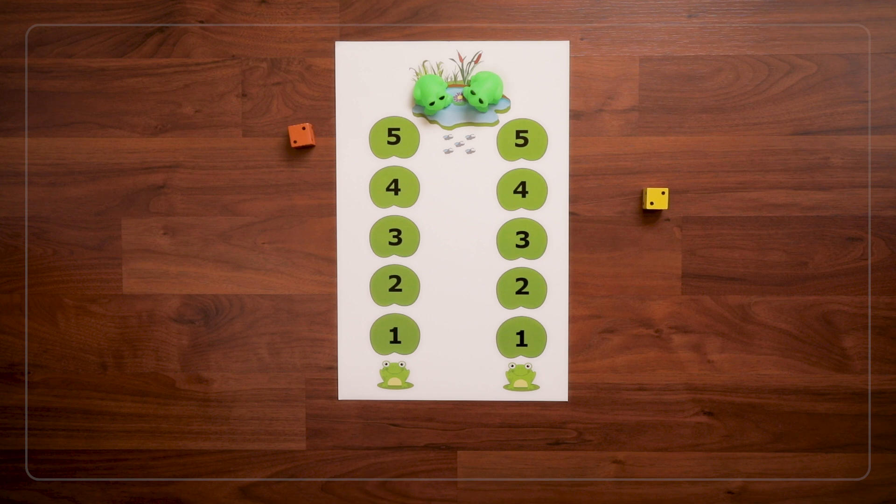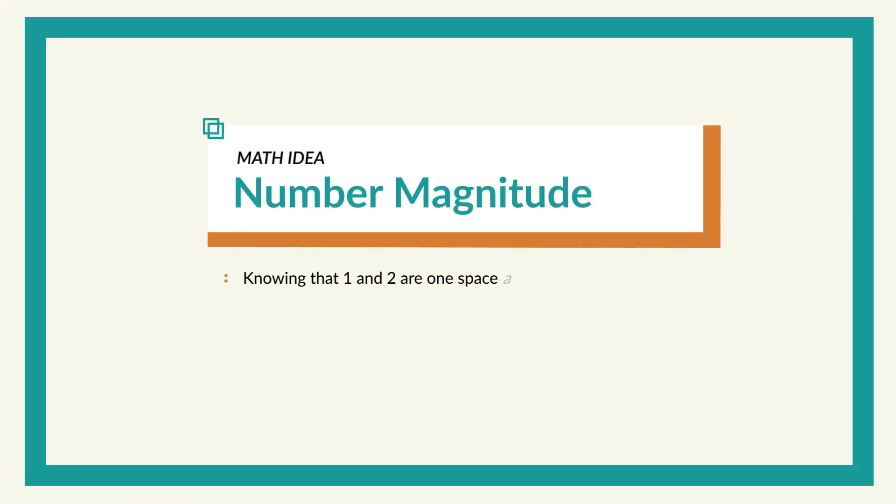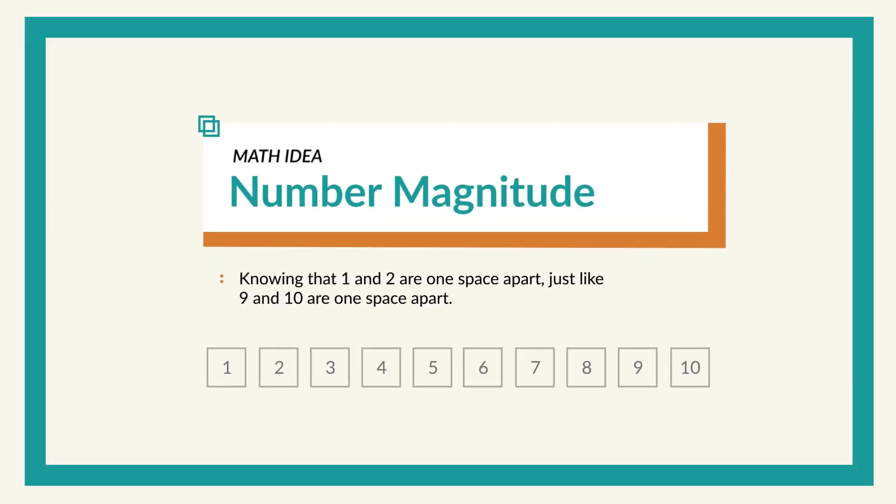One thing that's really important in early math is the idea of number magnitude and comparing numbers, knowing that the 2 is one more hop than the 1. Just like the 10 is one more hop than the 9.